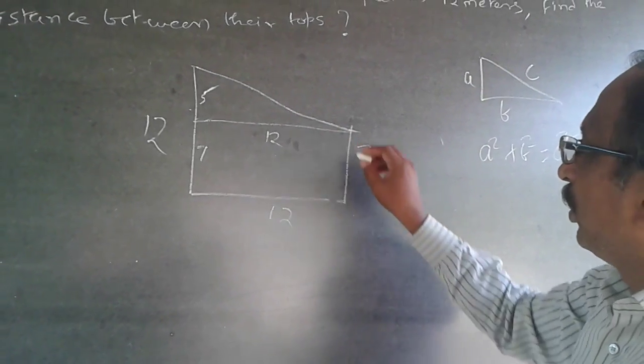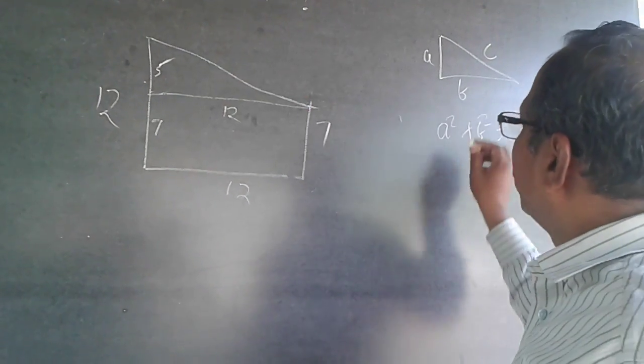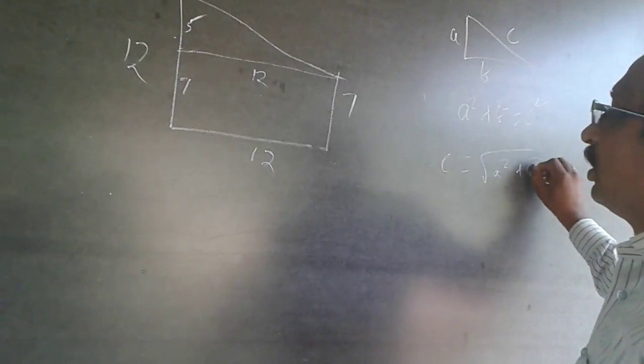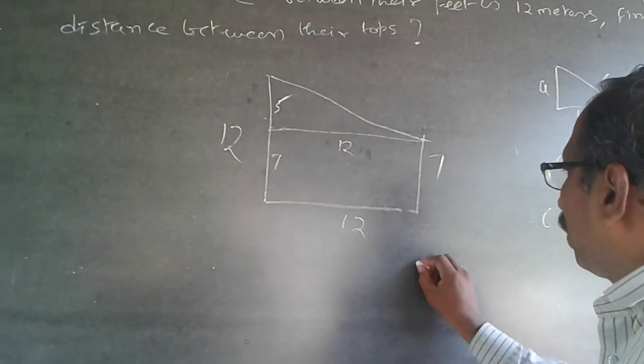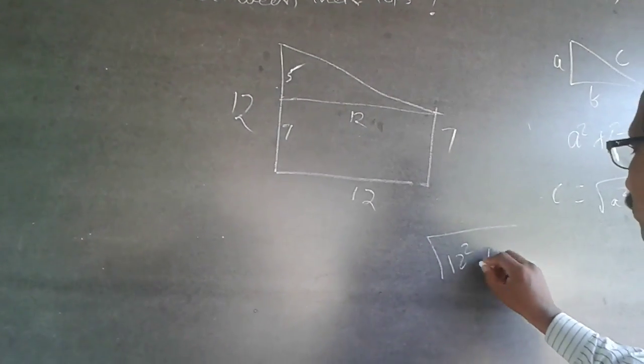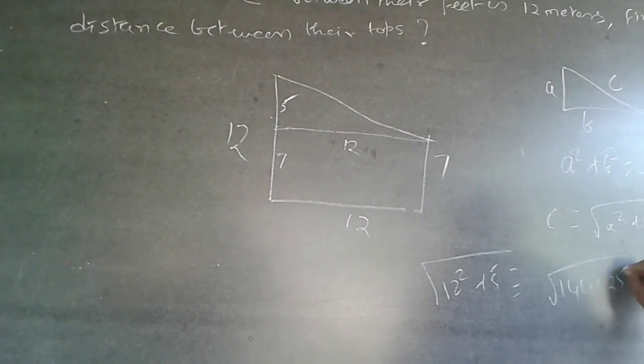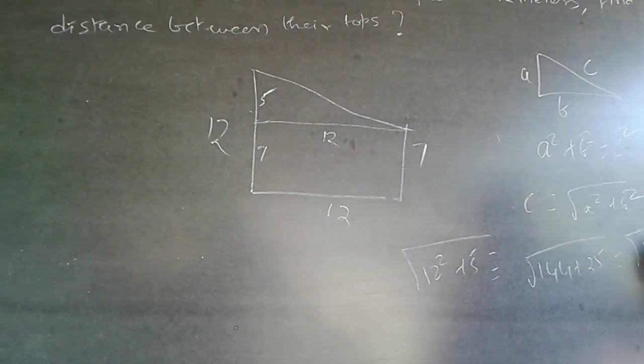I want this distance, the hypotenuse. So c will be equal to root of a square plus b square. This side will be equal to root of 12 square plus 5 square, which equals root of 144 plus 25, which is root of 169.